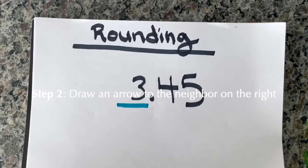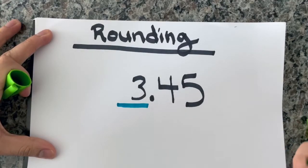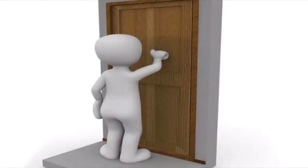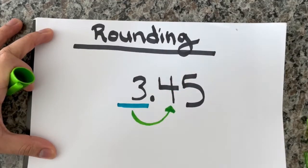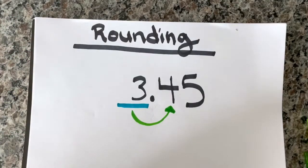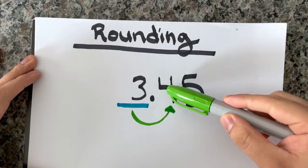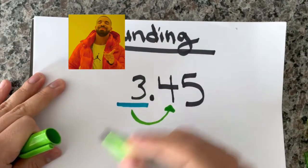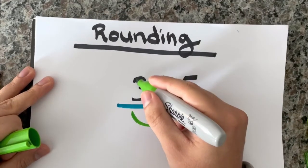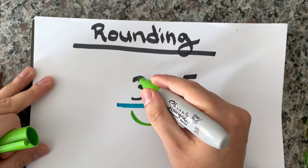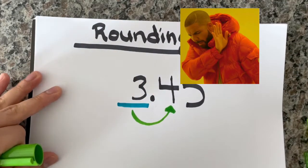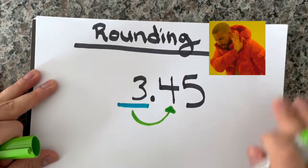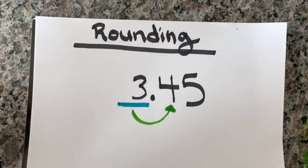Now step two: you're going to draw an arrow to its neighbor on the right. You want to knock on his door. Draw an arrow to the neighbor on the right. Now we're going to check him out — we knocked on his door and we're going to see if he is five or more. If he's five or more, we're going to add one more to our whole number. You'll often hear: 'Five or more, add one more.' If he's four or less, we're just going to let him rest and make everything a zero.